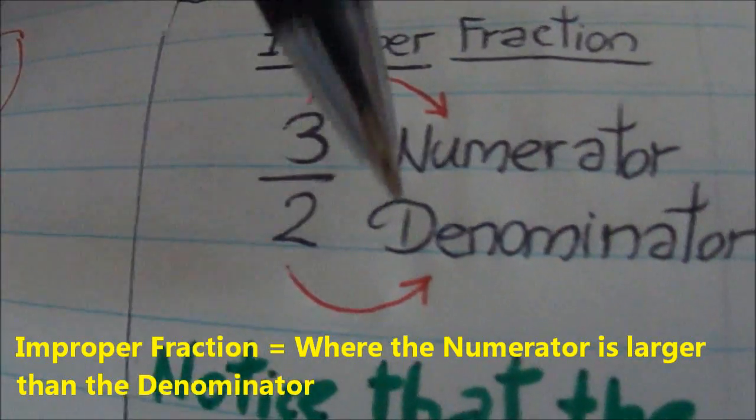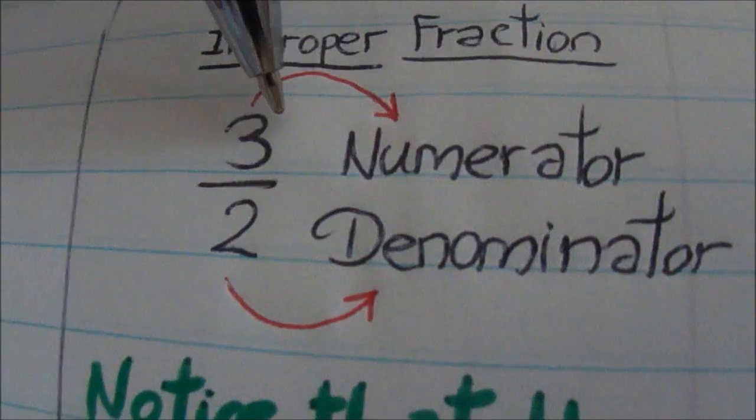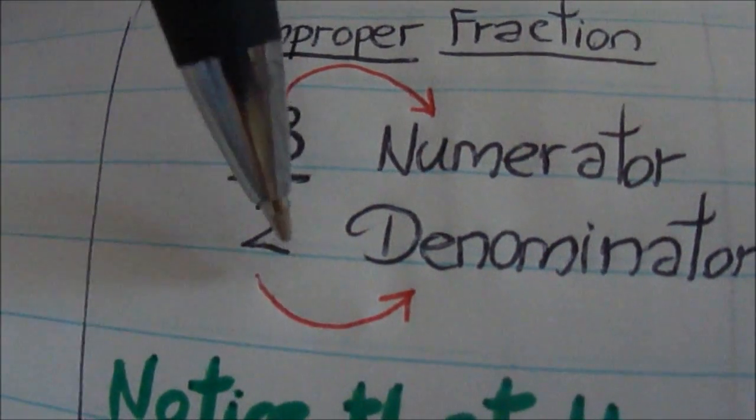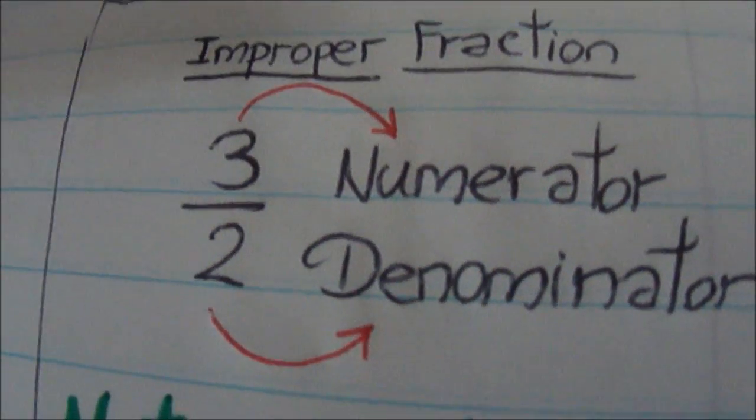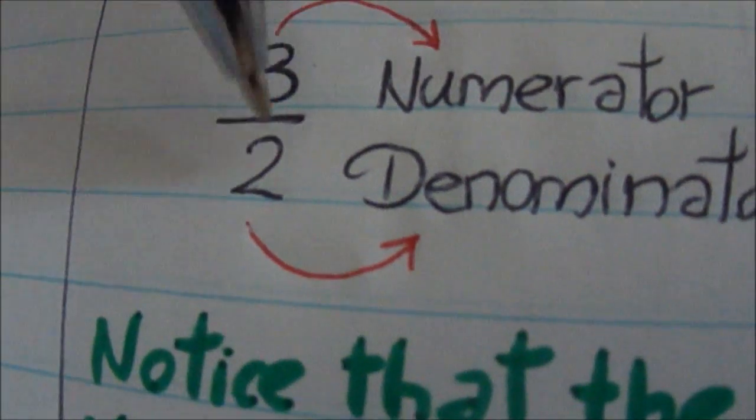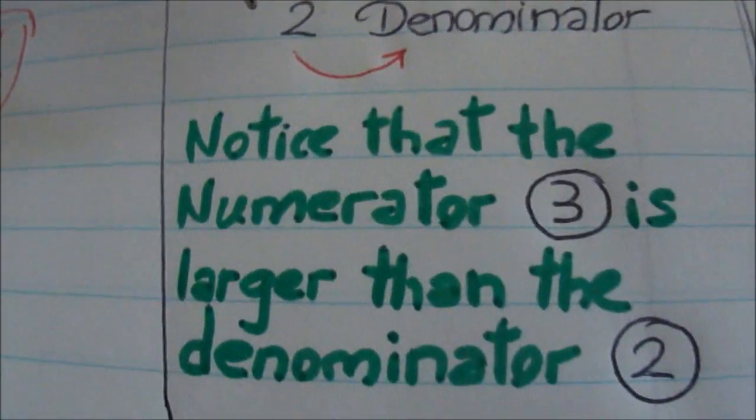Numerators on the top, denominators on the bottom. But notice here, the numerator is bigger or larger than the denominator. So this makes this an improper fraction. 3 is bigger than the 2. So that's an improper fraction right there.